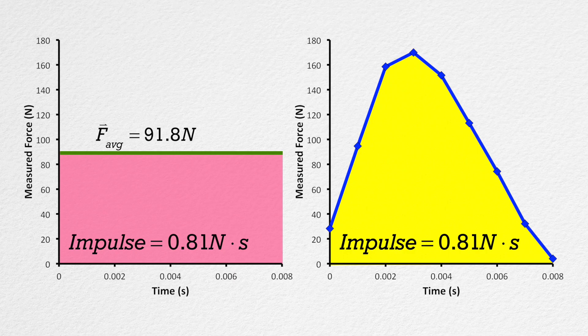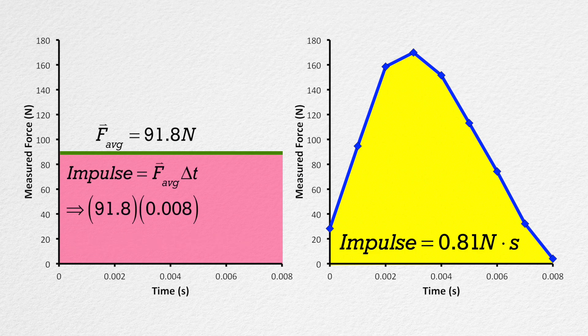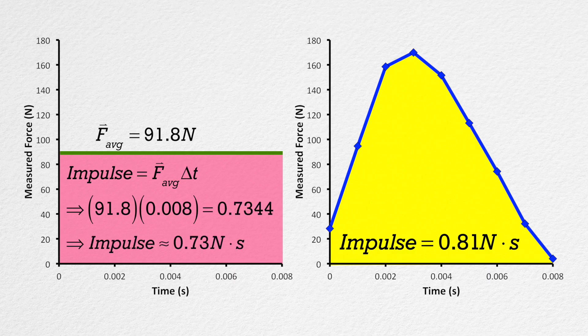The area in yellow is the area between the curve and the time axis, and the area in pink is the area of the rectangle created by the average force and the change in time during the collision. In this case, it is 91.8 newtons times 0.008 seconds, which is 0.73 newton-seconds with two significant digits, which is not quite exactly the same value for impulse we measured using the area under the curve.